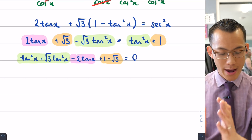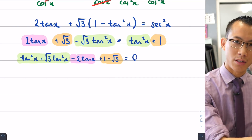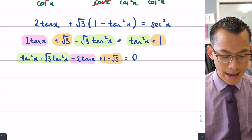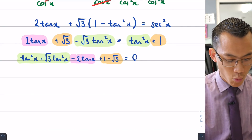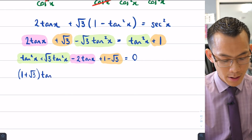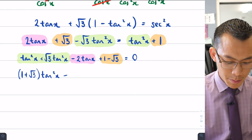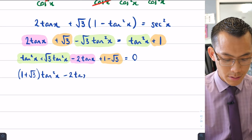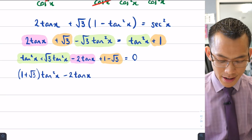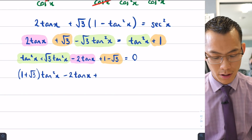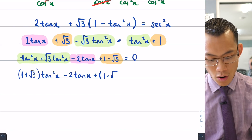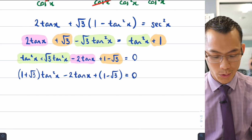To make the quadratic structure ultra clear, I can factor out and separate the tan²x, tan x, and constant segments explicitly: (1 + √3)tan²x − 2 tan x + (1 − √3) = 0. The constant 1 − √3 is one combined irrational number. This is now a standard quadratic in tan x ready to be solved.